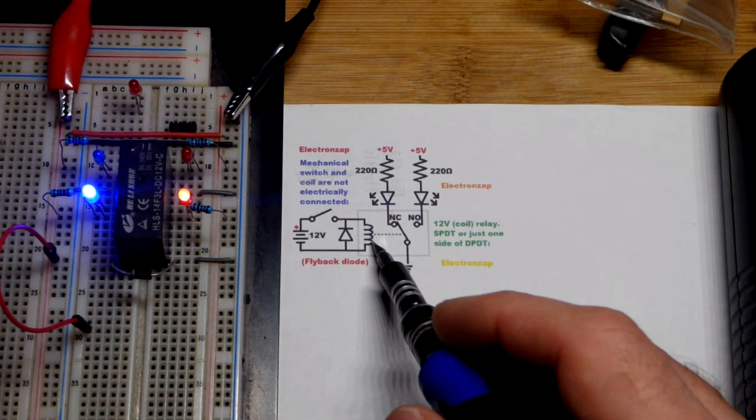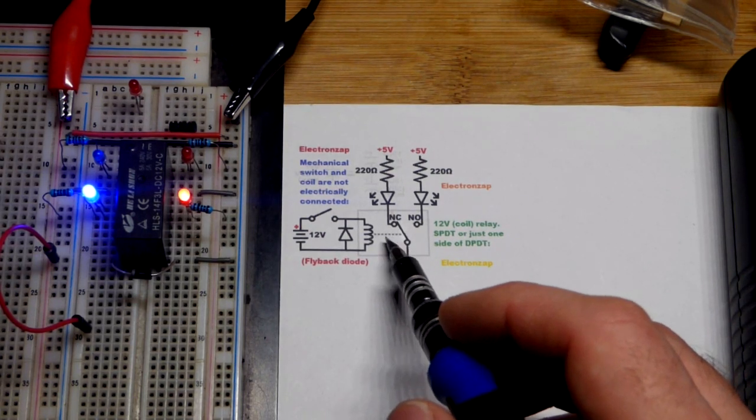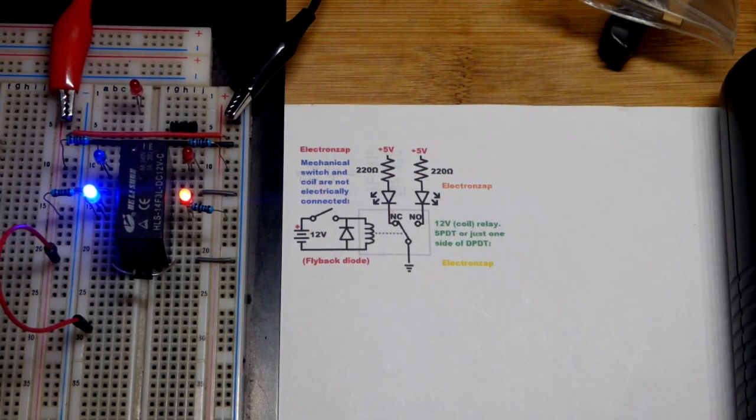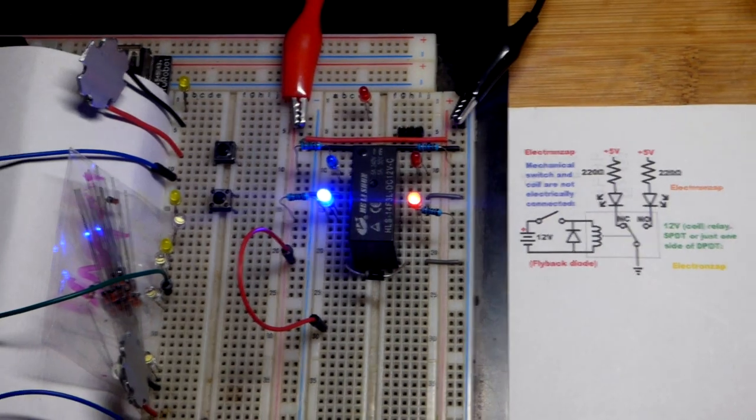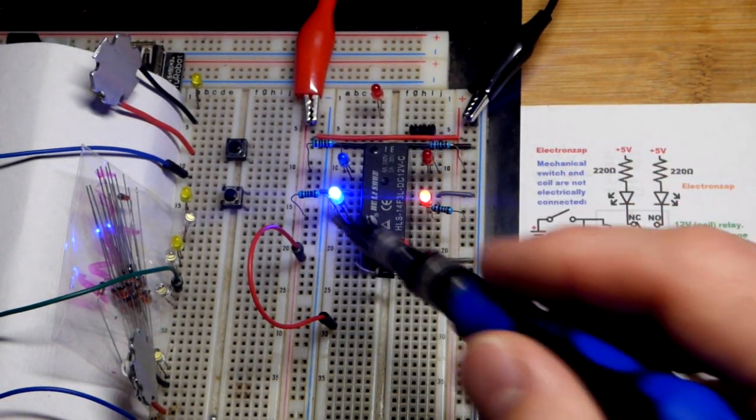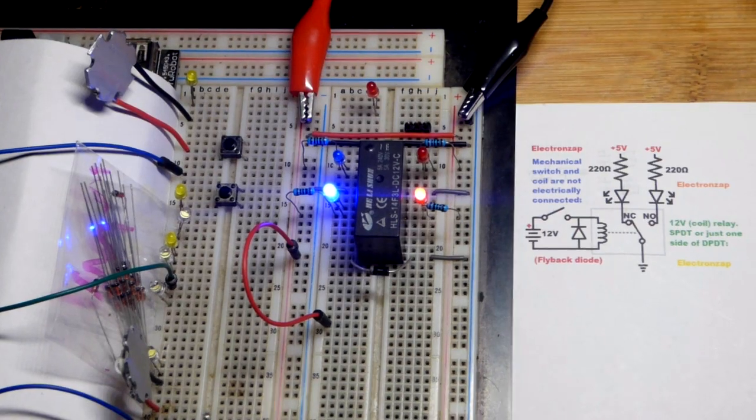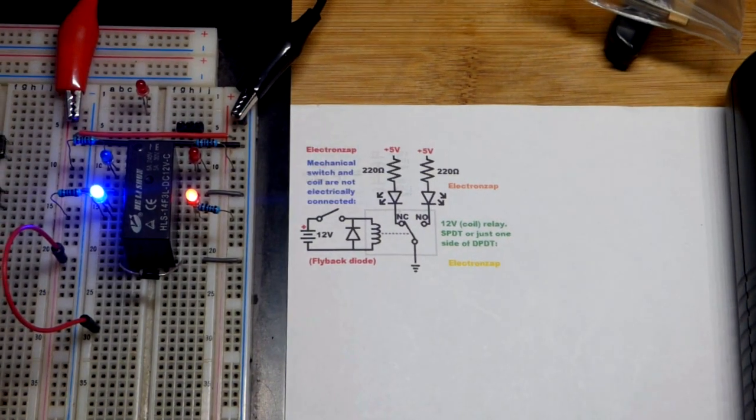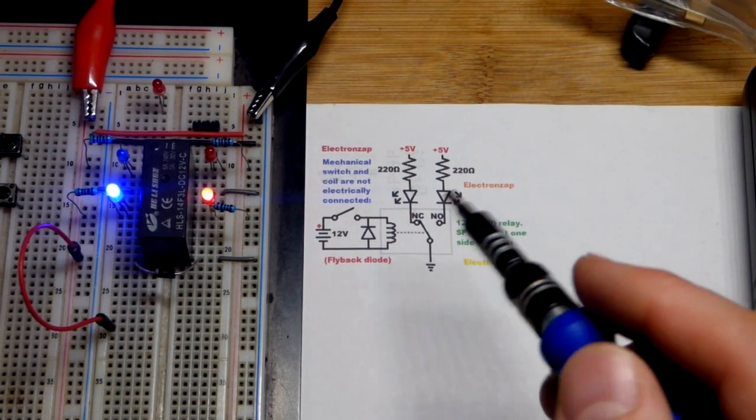So now we got a schematic diagram for a basic relay right there - single pole double throw. This is not the same setup we got there. We're using 12 volts for everything, so all these resistors are 1000 ohms. Now you can see we got the single pole double throw for this. You know, maybe there's